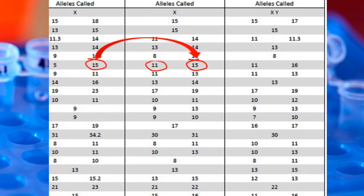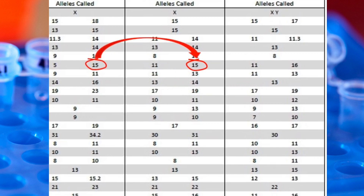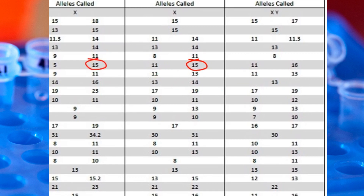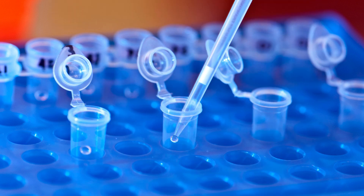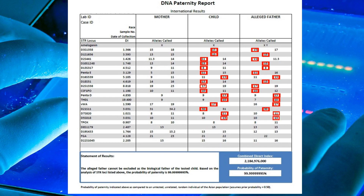For the child's two alleles, one allele comes from the mother and the other allele comes from the father. For example, if a child has two alleles of sizes 11 and 15, and the mother has sizes 5 and 15, then the child inherited the size 15 allele from the mother. The child must have inherited the size 11 allele from the father — the size 11 allele is the obligate paternal allele. Generally, the alleged father must have an allele of this size if he is the biological father of the child.